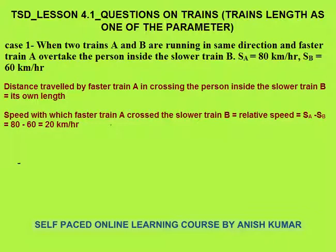First case: when two trains A and B are running in the same direction and the faster train A overtakes the person inside the slower train B. Sometimes it's very difficult for students to imagine this situation, so I have taken a video from YouTube that will really help you understand this concept. Let's see the video.